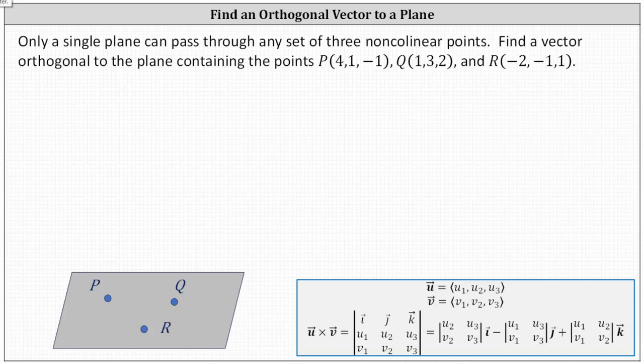Only a single plane can pass through any set of three non-collinear points. Find a vector orthogonal to the plane containing the points P, Q, and R, which are non-collinear.